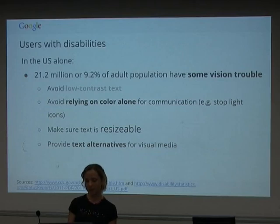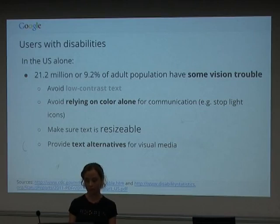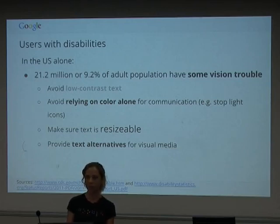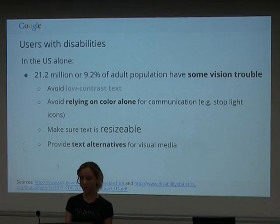These stats are for the US because they have the most easily accessible statistics. In the US alone, 21.2 million people — about the population of Australia — or 9.2% of the adult population, have some vision trouble. So the way we can accommodate these users is to do things like avoiding low contrast text. Who has been annoyed at a website with grey on white text? That is going to improve the experience for absolutely everybody.